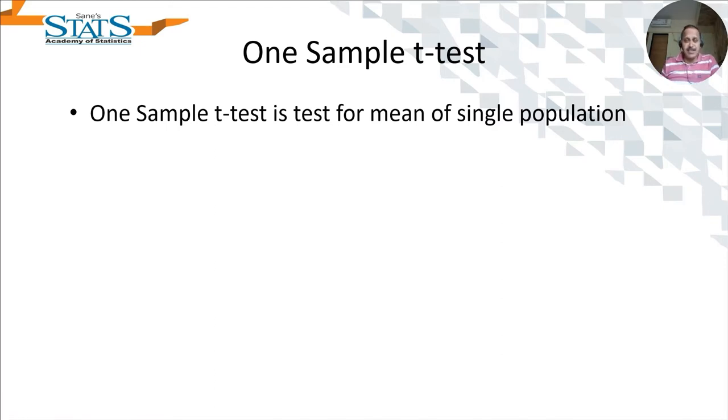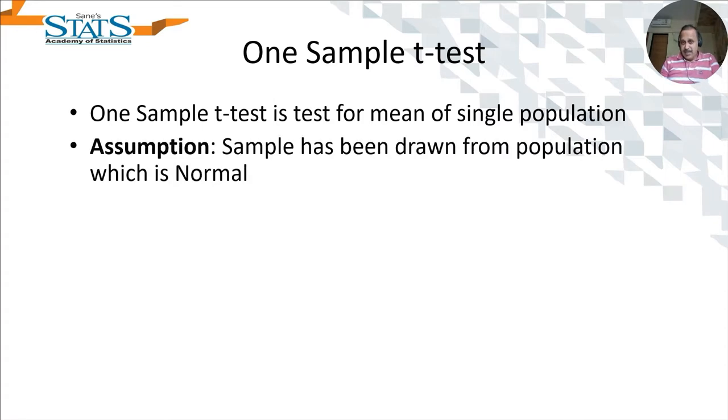One sample t-test is for a single population or single sample. The assumption is that the sample on which we are performing the one sample t-test is drawn from a population which follows normal distribution. I will clarify this in one example.